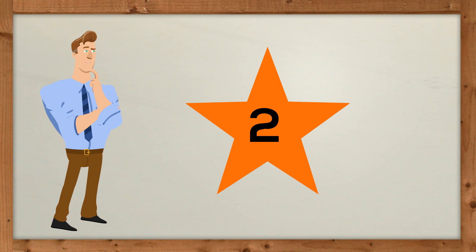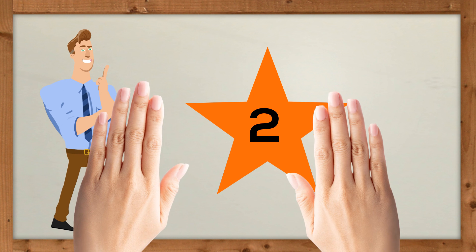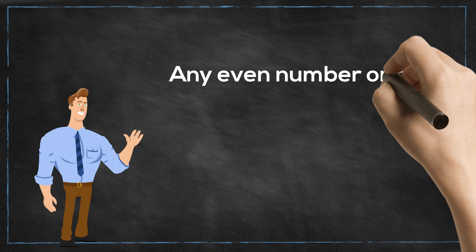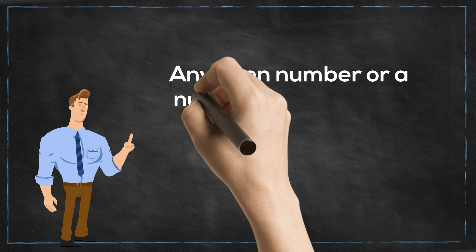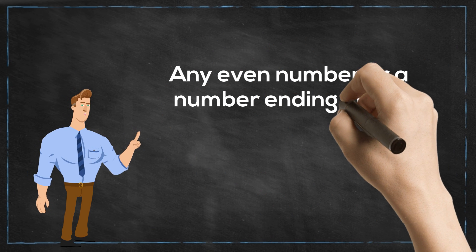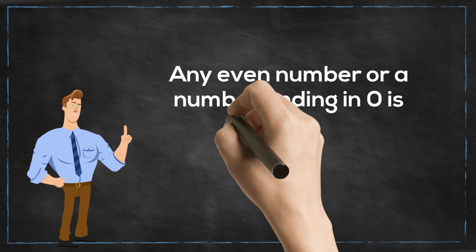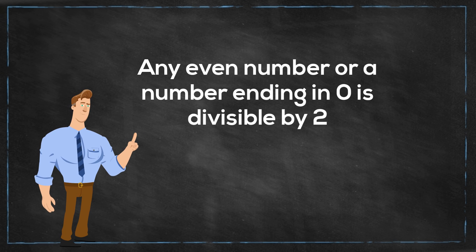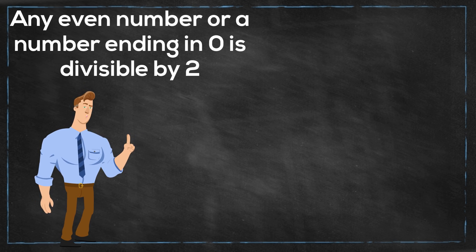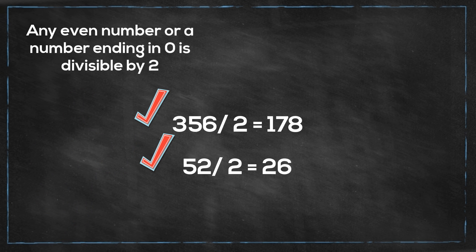A number is divisible by 2 if it is an even number, or a number ending in 0. Take a look at these two numbers: 356 and 52. They are both divisible by 2 because they both end in even numbers.